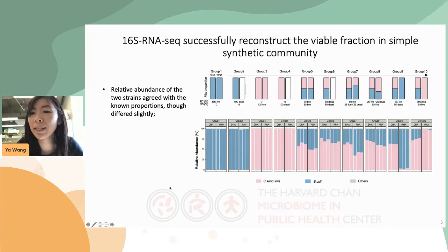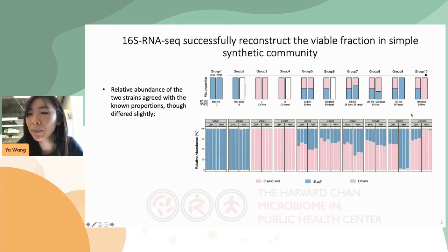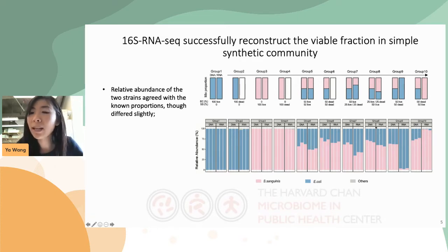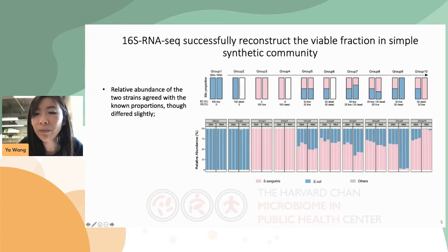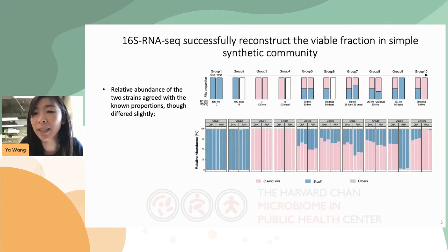Only the viable cells were detected in the monoculture groups 1 to 4 and groups 9 and 10. In mixed culture groups 5, 7, and 8, although the proportion of the two microbes differed slightly from the known percentage, the trends were highly consistent with expectations. This would suggest that 16S RNA-seq was able to at least semi-quantitatively differentiate viable from non-viable microbes in these extremely simple communities.